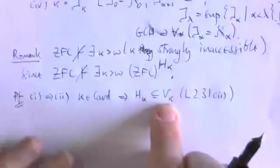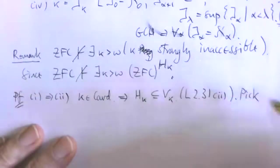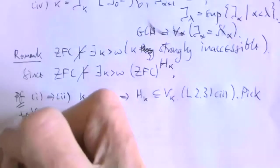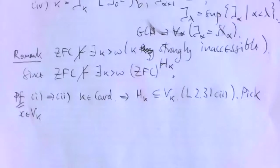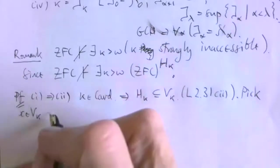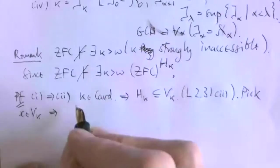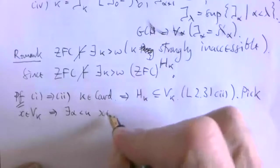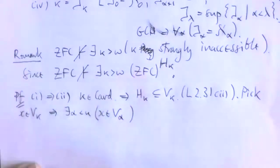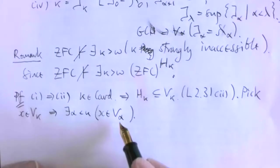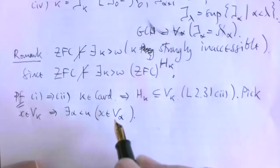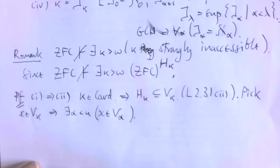Pick an x in V_kappa. I want to show x is in H_kappa. Since kappa is a limit ordinal, V_kappa is the union of the smaller V_alphas. So we'll show by induction that for alpha less than kappa, all of these V_alphas have size less than kappa. That will do, because H_kappa is the collection of transitive sets of size less than kappa, and V_alpha will then be a transitive set of size less than kappa.